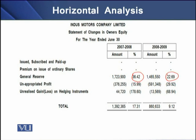The general reserves of the company increased from year to year. In terms of total equity, we can see that as compared to the year 2007, in 2008 the total owners' equity increased by 17.31%, and in terms of absolute value, this increase was Rs. 1.392 million. Similarly, with reference to 2009, as compared to 2008, the total equity increased by 9.12%, and in terms of absolute value, the increase is Rs. 0.86 million.